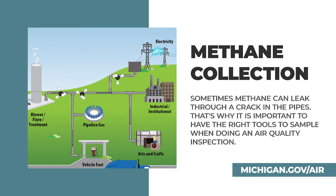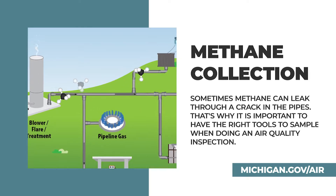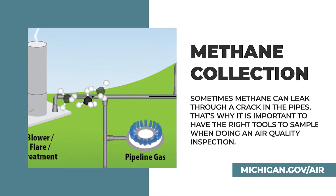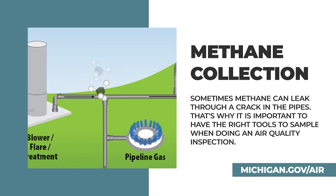It is important to collect as much of the methane as possible. However, sometimes leaks occur in the gas collection system. Sampling of methane in the air is a very important part of some air quality inspections to determine whether leaks from pipes or other process equipment are present.